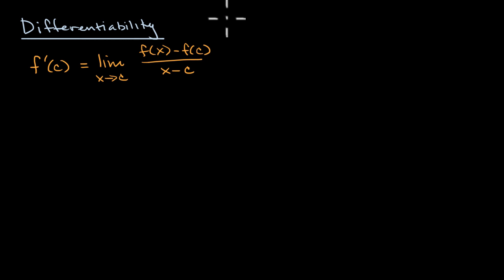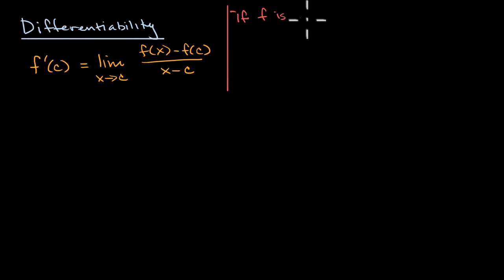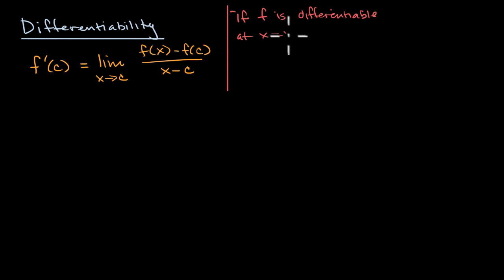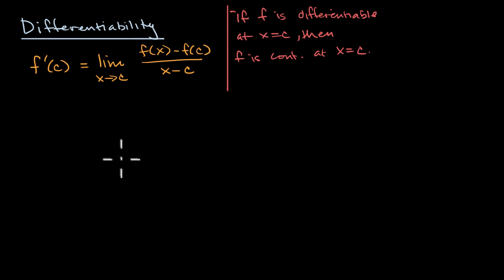I'm going to make a few claims in this video without proving them rigorously — this is more to build intuition. The first claim: if f is differentiable at x equals c, then f is continuous at x equals c. So if we can find this limit, if we can find this derivative at x equals c, then our function is also continuous there.